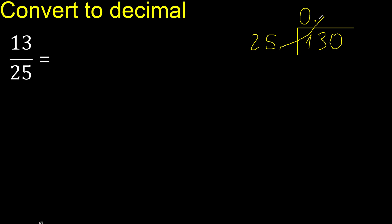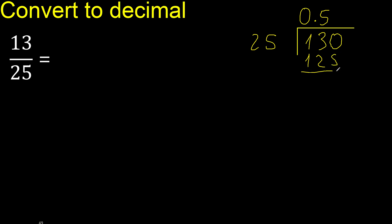Multiply by which number is nearest to 130 but not greater. Multiply by 6 is greater. Multiply by 5 is 125, which is not greater — ok. Subtract: 130 minus 125 is 5. There is no number that goes down, therefore complete — always complete with 0.